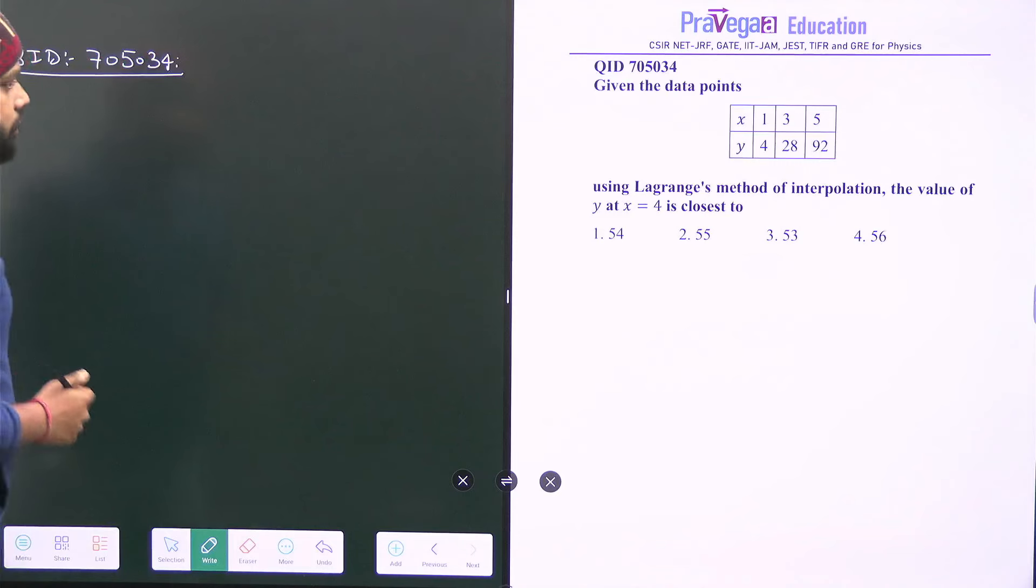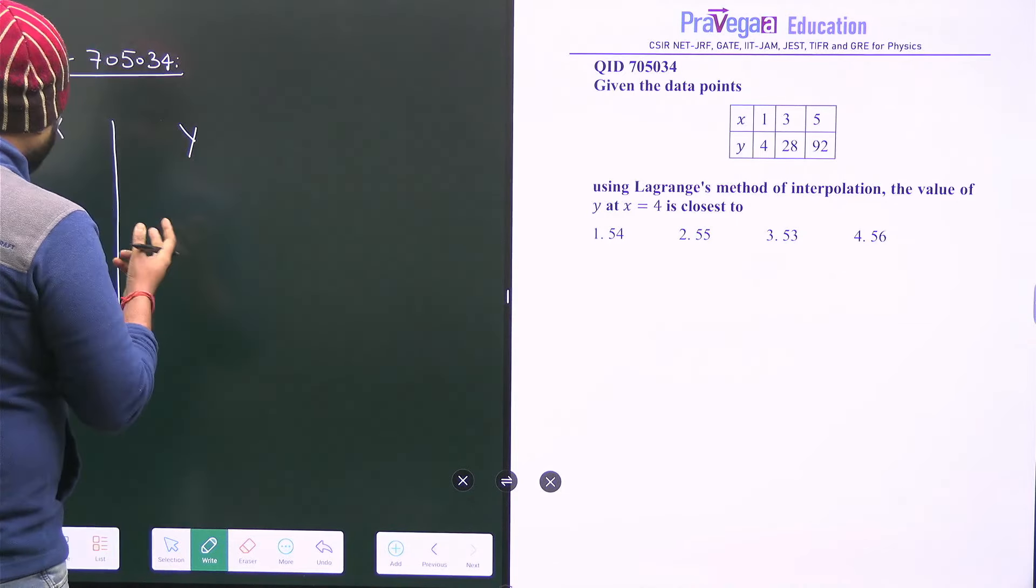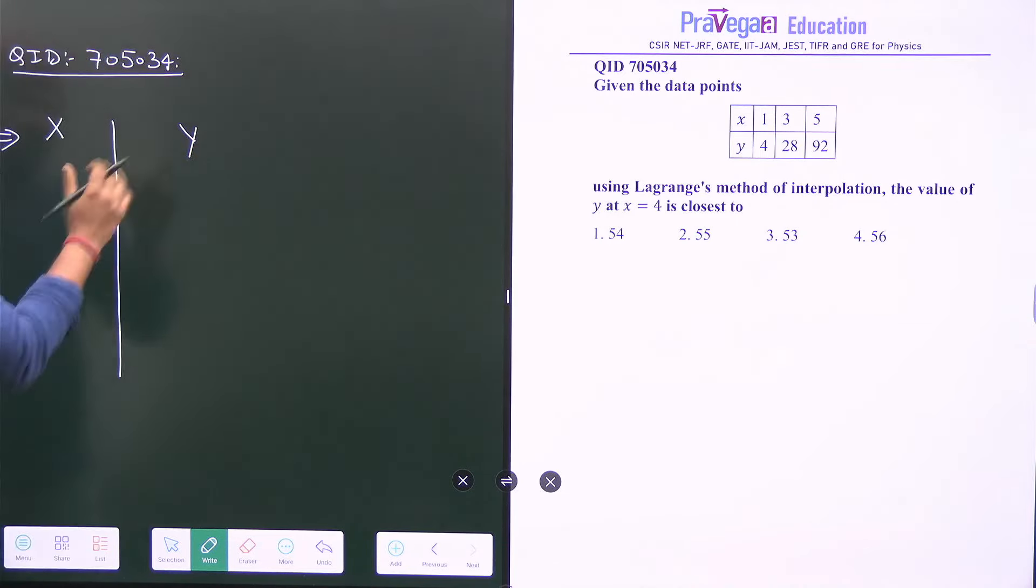So it's a very easy question. Let's form the table first of all. I am making a table here. Let's suppose this is x and this is y. You can directly write this as x and y.